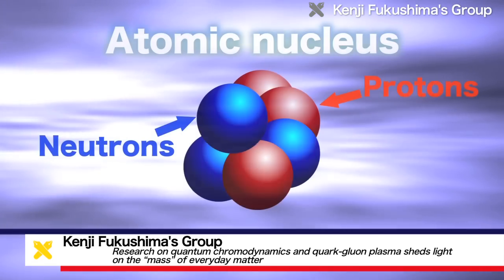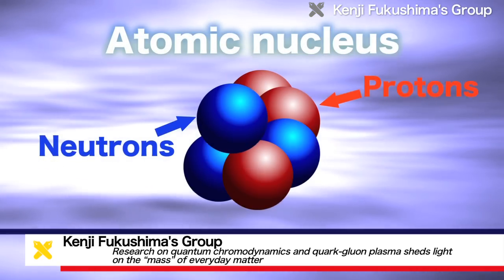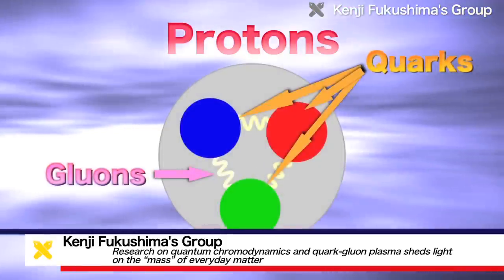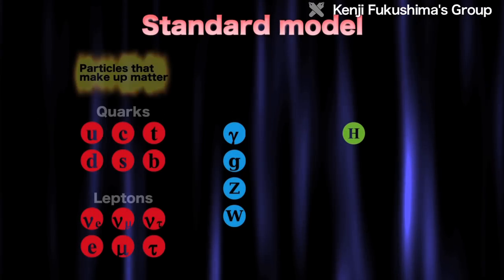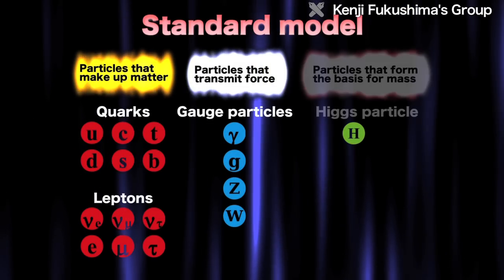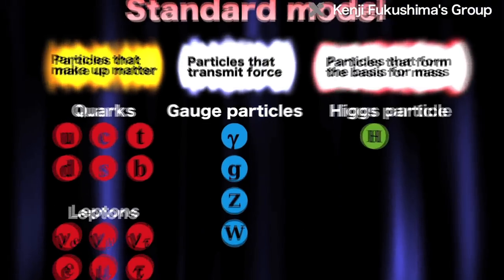When constituents of matter are examined on ever smaller microscales, ultimately we arrive at fundamental constituents called elementary particles. Nowadays, a theory of elementary particles has been established. It's called the Standard Model.